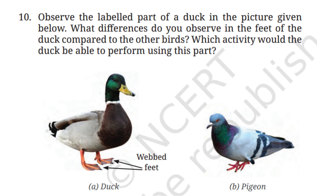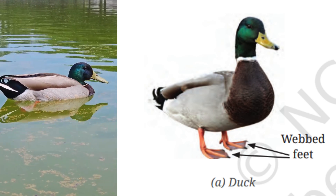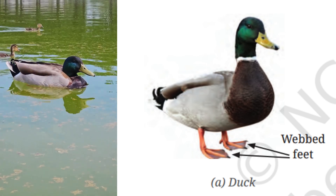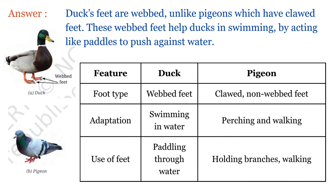Let's read question number 10. Observe the labeled part of a duck in the picture. What differences do you observe in the feet of the duck compared to other birds, and which activity would the duck be able to perform? The feet of a duck are webbed — its toes are connected by a thin skin-like membrane. This helps the duck swim easily, as the webbed feet act like paddles, pushing water backward and allowing the duck to move forward smoothly. This is an important adaptation for aquatic life. On the other hand, pigeons have clawed feet for gripping trees, wires, or ledges — adapted for gripping and walking, not swimming. In summary, ducks have webbed feet for swimming while pigeons have clawed feet for perching and walking.